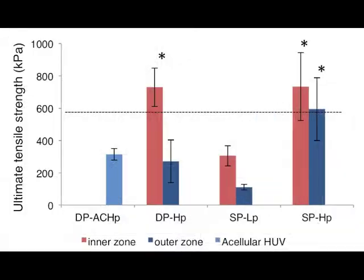Single perfusion circuits at high pressure displayed significantly higher outer zone tensile strength relative to all other seeded conditions. These investigations illustrate the influence of direct nutrient gradients, where precisely controlled perfusion conditions significantly affect cell migration, distribution, and function, resulting in pronounced effects on construct mechanics during early remodeling events.